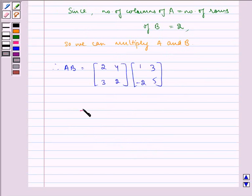Now, which is equal to matrix, multiplying first row with first column, so we get 2 into 1 plus 4 into minus 2. Then first row with second column, so we get 2 into 3 plus 4 into 5.